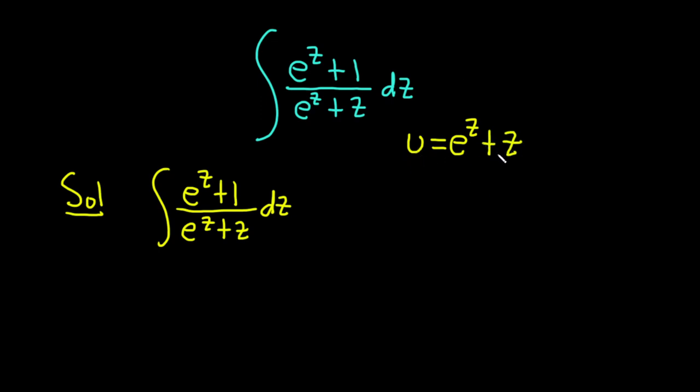Let's see. Let's differentiate both sides of this equation. On the left-hand side, we'll get du. And on the right-hand side, the derivative of e to the z is e to the z, and then the derivative of z is 1, so we have a plus 1, and then we have a dz.